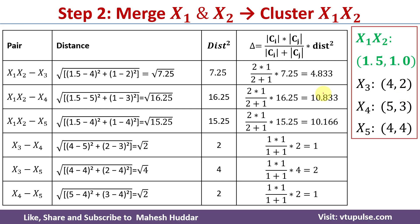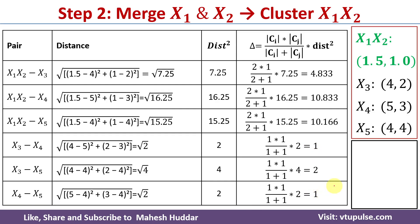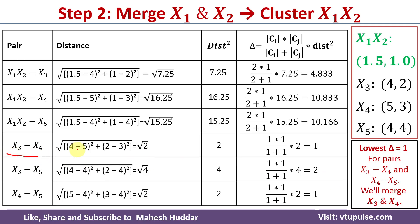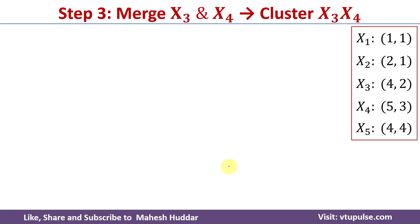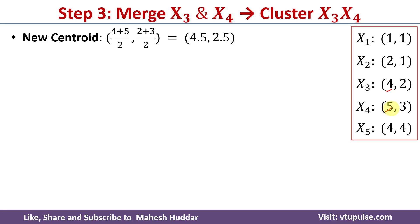Once we find all merging costs, we check which pair has the minimum merging cost. The pairs x3-x4 and x4-x5 both have merging cost equal to 1, which is the minimum. We can select either one; we will merge x3 and x4 to get the new cluster {x3, x4}. The new centroid is (4+5)/2, (2+3)/2, which equals (4.5, 2.5).